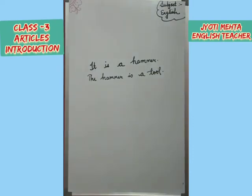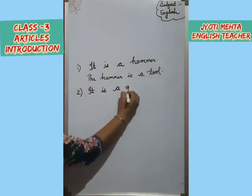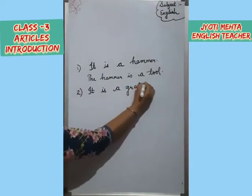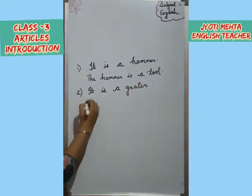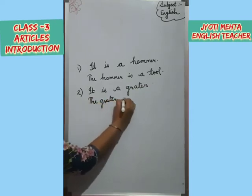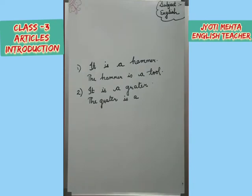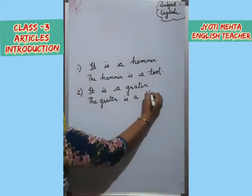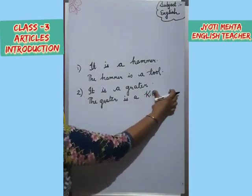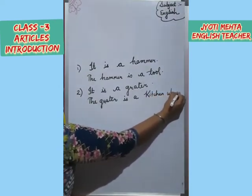Next, it is a grater. It is a grater, or we can say it is a peeler also. And the grater is a — what is it? The grater is a kitchen utensil. Kitchen utensil.